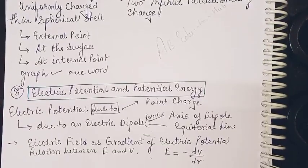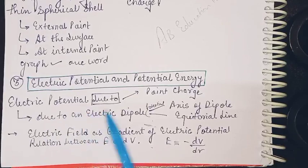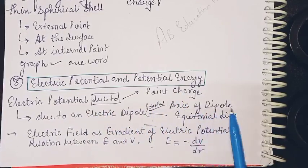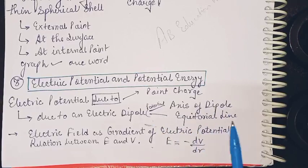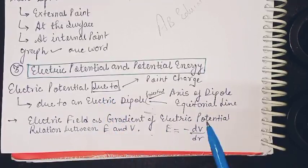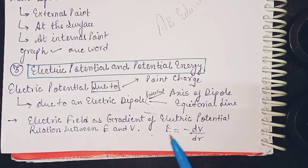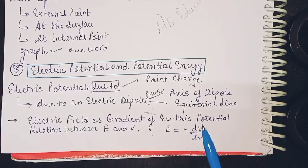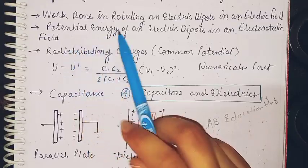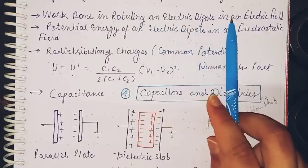Electric potential and potential energy: electric potential due to point charge, electric dipole, potential of axis of dipole and potential of equatorial line. Then electric field as gradient of electric potential, that is the relation between E and V.